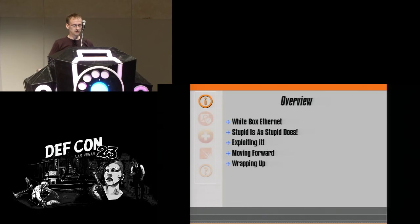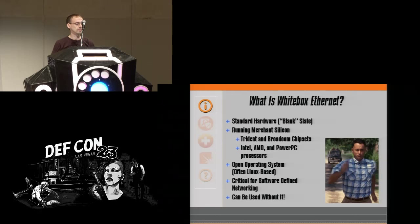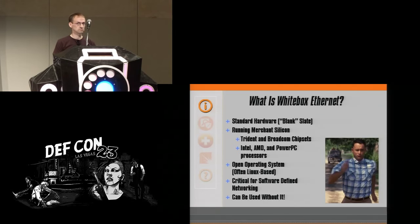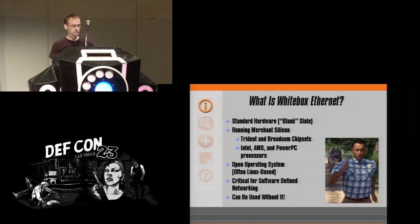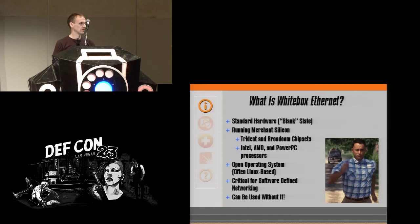Let's start out with white box Ethernet. It's standard hardware — a blank slate — running merchant silicon: Trident Broadcom chipsets, Intel, AMD, and PowerPC processors. It uses an open operating system that is often Linux. The idea is to remove the hardware from the equation, to make it a commodity by using off-the-shelf components. From that point forward, it's the software that makes the difference. It's critical for software defined networking, but it can be used without it.